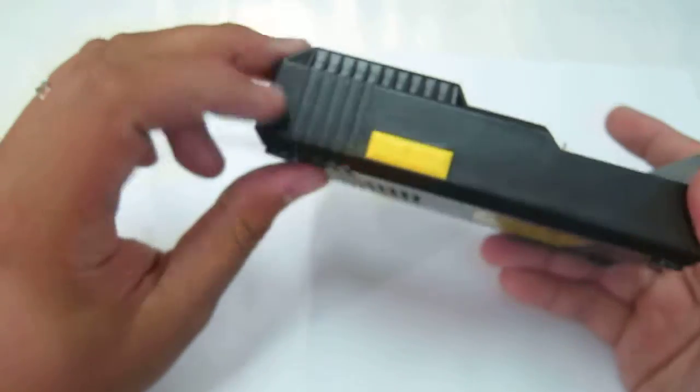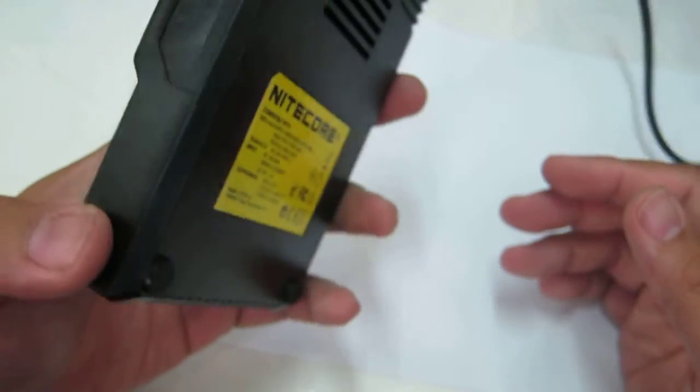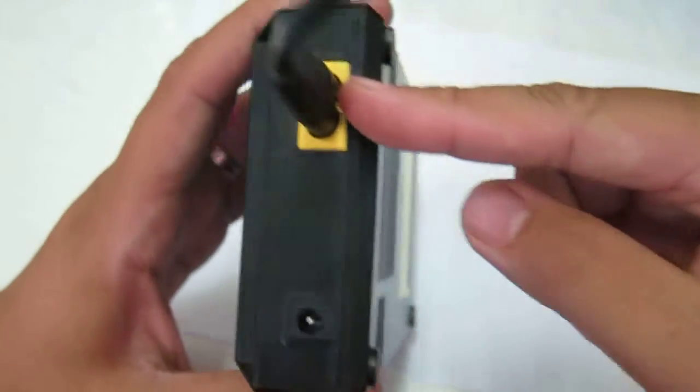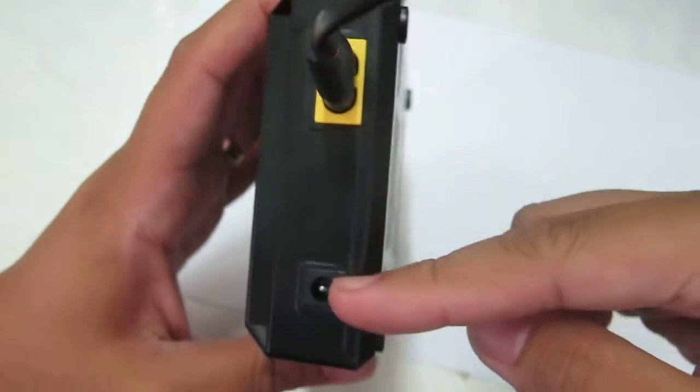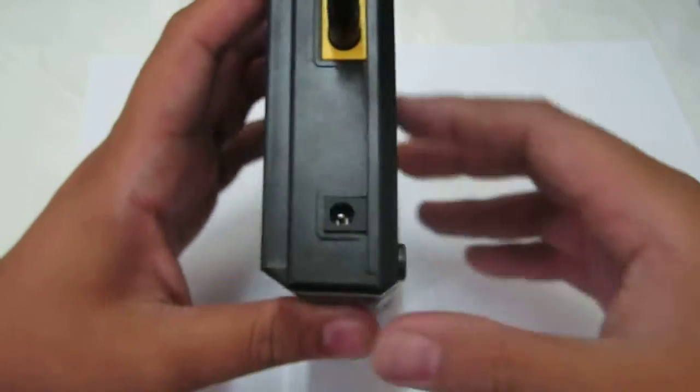You have your buttons here on the side - a slot button and a mode button. On the other side you have nothing, and on top you have the socket and the DC adapter plug.